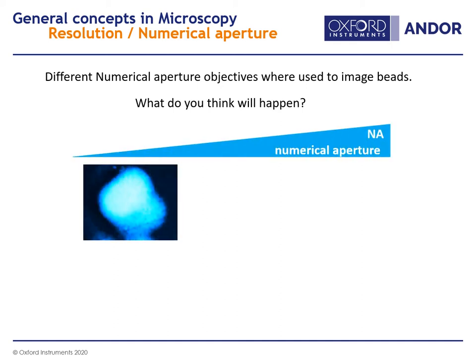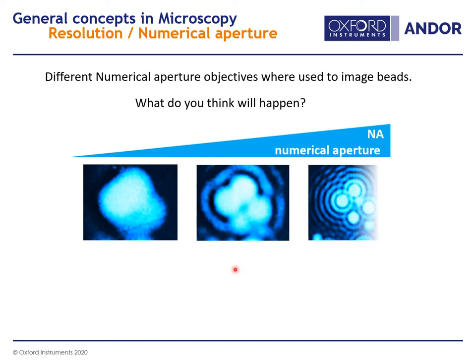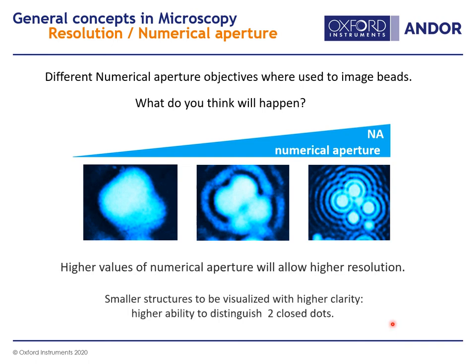Here I have an image of beads that were imaged at different numerical apertures. As you increase the numerical aperture, you widen the angle of light captured by the objective and therefore increase the resolving power. We go from a blob where we don't know what's there, to finding out that there are four beads in that blob. Higher values of numerical aperture allow higher resolution, and smaller structures become visible with higher quality. Resolution is the ability to distinguish two close dots as separated.